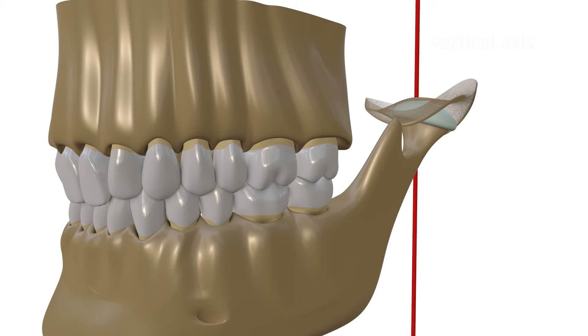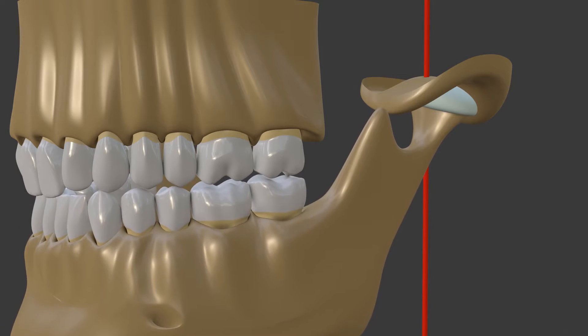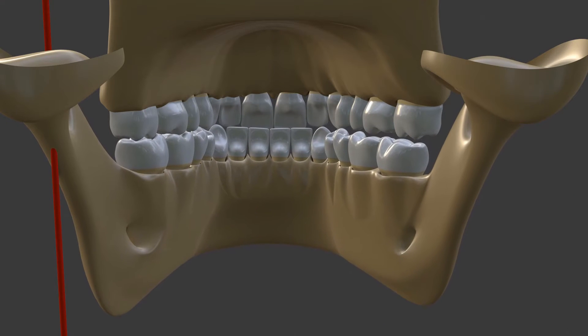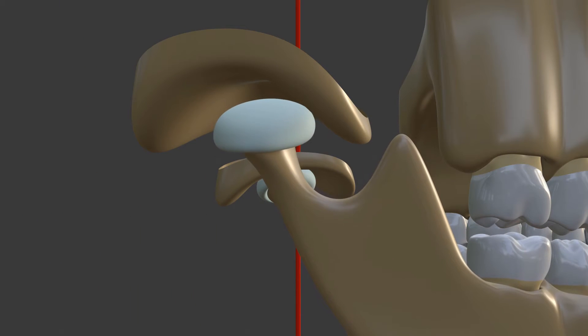The mandible makes a vertical rotational movement on the working side condyle axis during lateral movements while completing the chewing cycle. Meanwhile, the balancing condyle makes a forward, inward, and downward movement. The chosen articulator should mimic this movement.